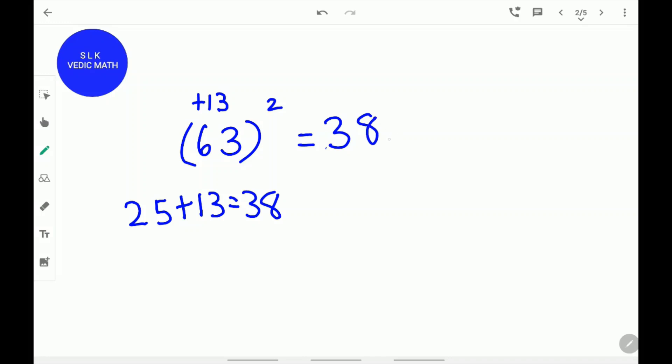Next, we need to find the next two digits. Now, do 13 square. 13 square is 169. Write 1 on top of 8 because there is only supposed to be 2 digits left and write 69.